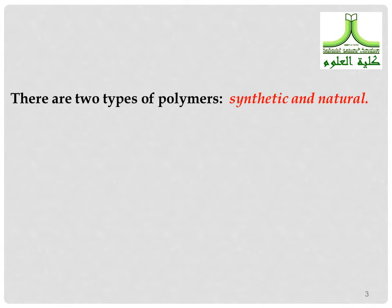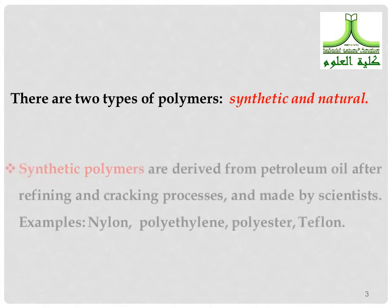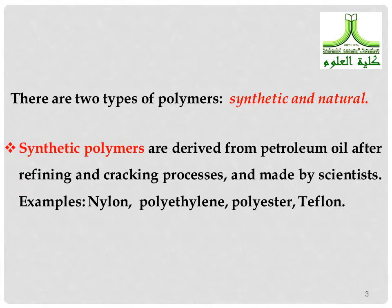There are two types of polymers: synthetic and natural. Synthetic polymers are derived from petroleum oil after refining and cracking processes and made by scientists. Examples: nylon, polyethylene, polyester, and Teflon.